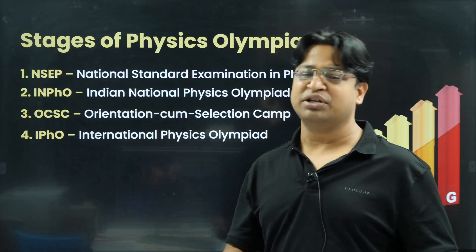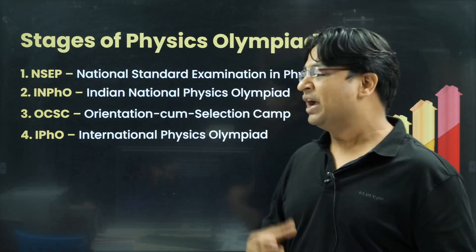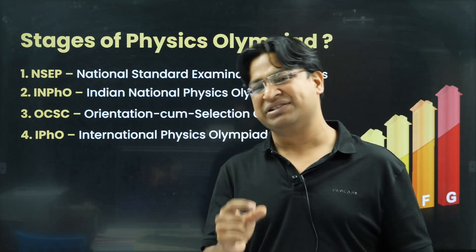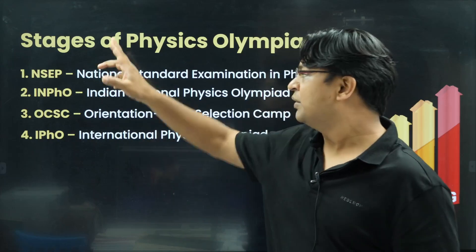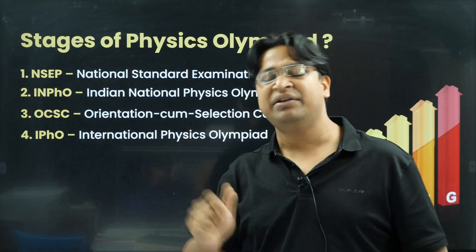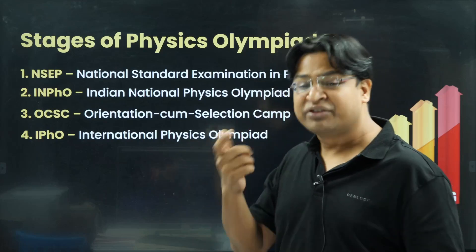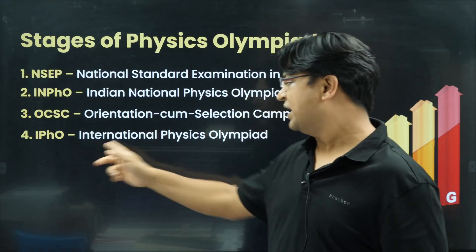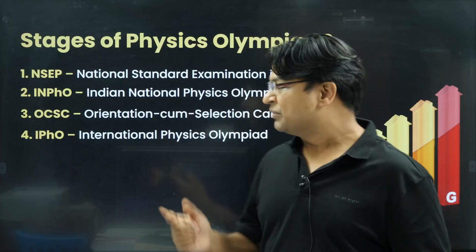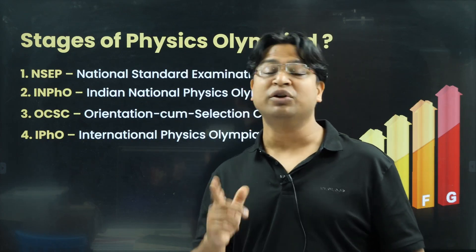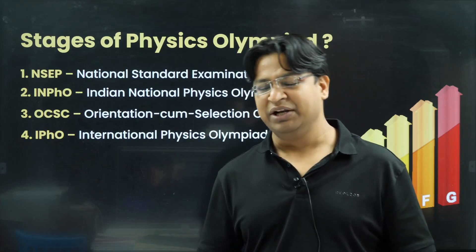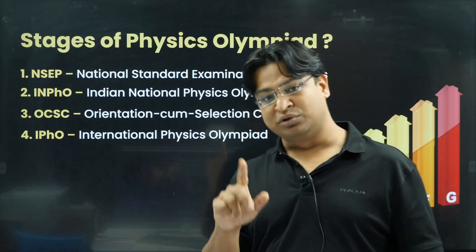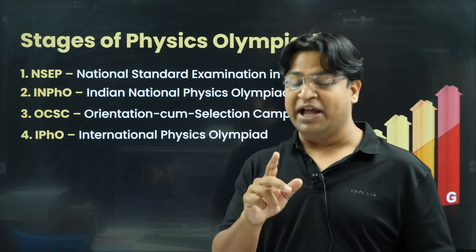During the OCSC camp, additional theory is taught, students do practicals, and exams are held. Based on performance, a team of five individuals is selected to represent India. From 300 students to 30–35, then to a team of five — the Indian contingent is formed, trained, and taken to participate in the International Physics Olympiad. This year the exam was held in France — the 55th edition — and our student Ridesh won a gold medal. Prior to this, Dhruv Alop Shah won gold at IPhO 2023. Both Dhruv and Ridesh also won medals at the Asian Physics Olympiad.